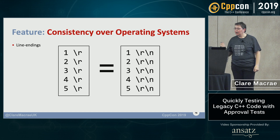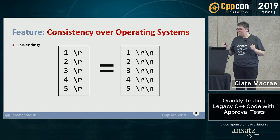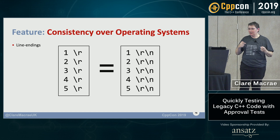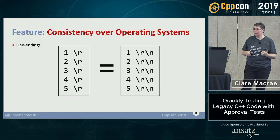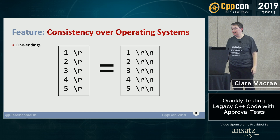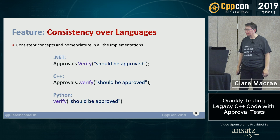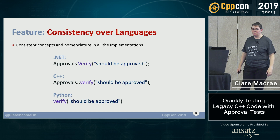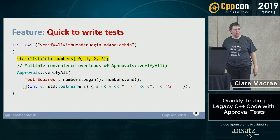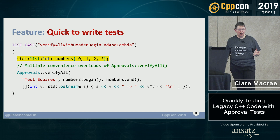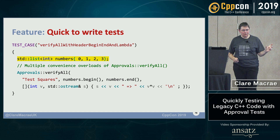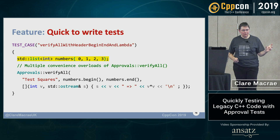It's consistent across languages — C++, .NET, Python all share the same vocabulary and concepts. To scale it up: it's quick to write tests. If you have a container of objects, you can pass that to `Approvals::verifyAll`. Using a lambda on the bottom line — for each of the four values in the container, it writes out the input value V, then equals arrow, then V squared.